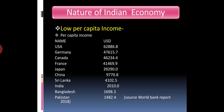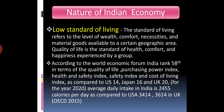The US per capita income is 62,886.8 US dollars. Germany is 47,650, Canada is 46,234, France is 41,469, Japan is 39,290 US dollars, China is 9,770.8 US dollars, Sri Lanka is 4,102.5 US dollars, and India is 2,010 US dollars. So you can understand that India's per capita income is very low compared to these countries.